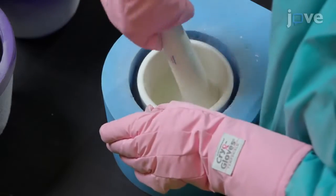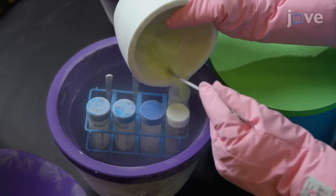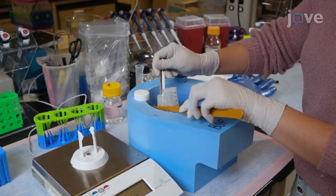To begin, grind a few sorghum leaves with liquid nitrogen and store them in a 50 milliliter centrifuge tube at minus 80 degrees Celsius. Use approximately 4 grams of the leaf powder for histone analysis of each sample.